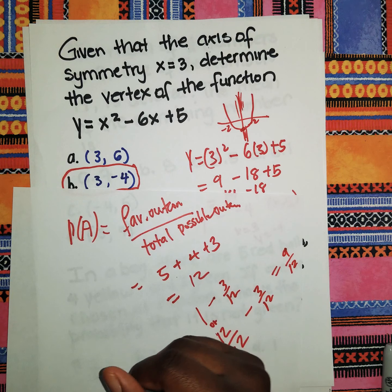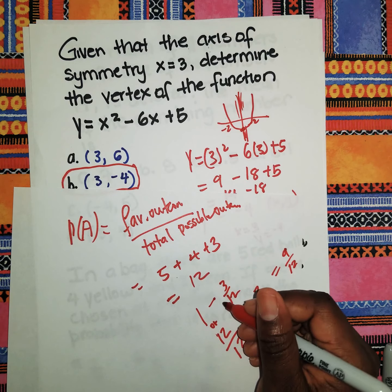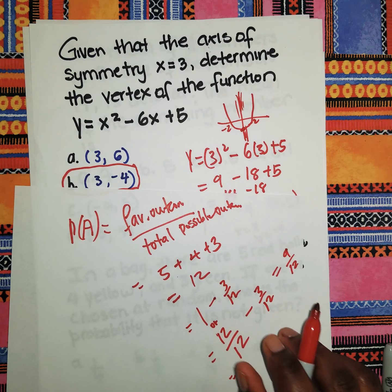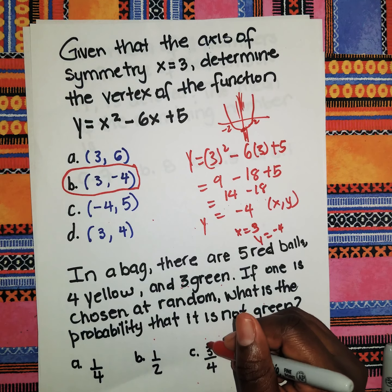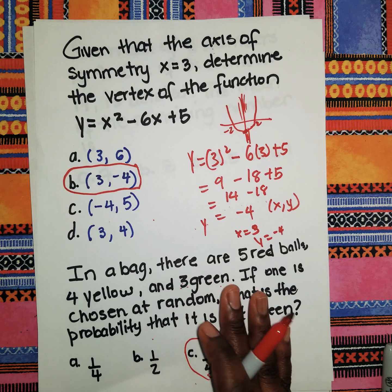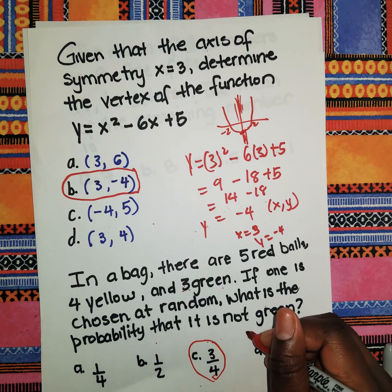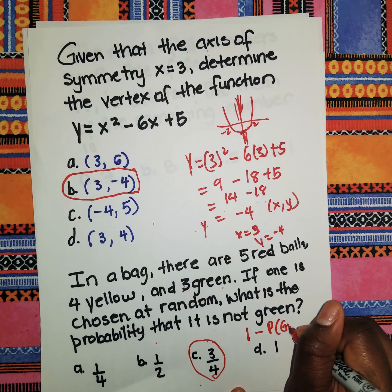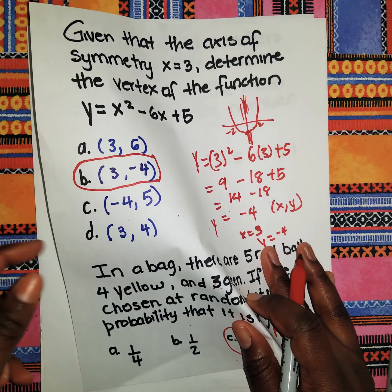So probability of not green = 1 − P(green) = 1 − 3/12 = 9/12, which reduces to 3/4. That's three quarters, and that's how we get it for this one.